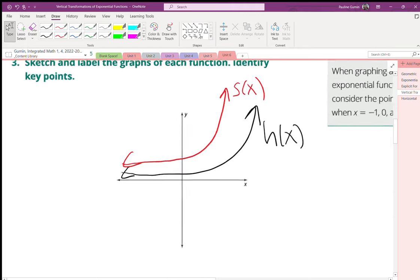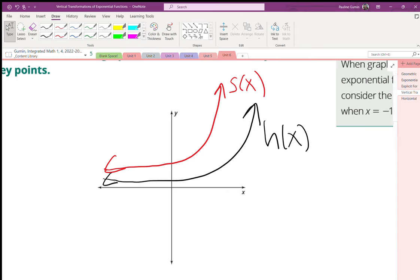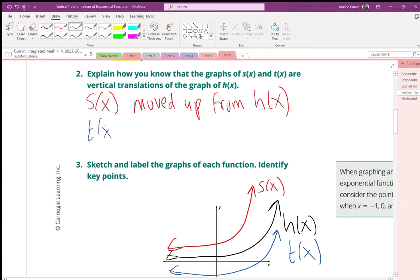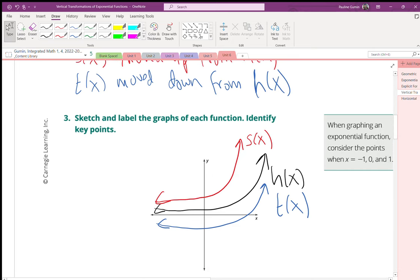Then I had us graph t of x, which was 2 to the power of x minus 3. And it ended up down here. So we were able to conclude that t of x moved down from h of x. First we just saw it like a picture graphed in our calculator. And then what we did is we actually explored the points algebraically.